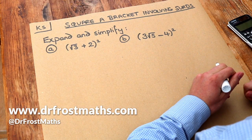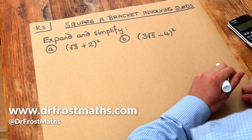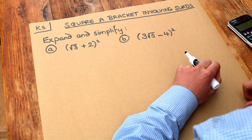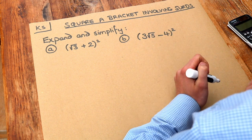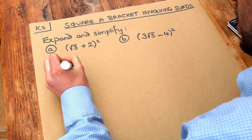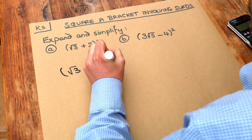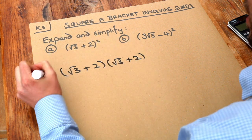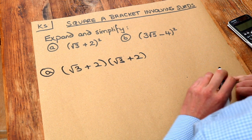Hello and welcome to this Dr. Ross Mass's key skill video on squaring a bracket involving surds. We have a bracket involving surds and we want to square it. This is no different to multiplying out two brackets with surds. In general, if you want to square a bracketed expression, that just means that thing multiplied by itself, so we write it out twice and multiply out the brackets as usual.